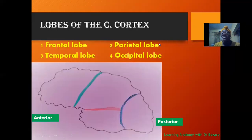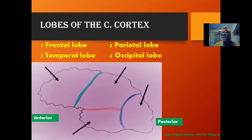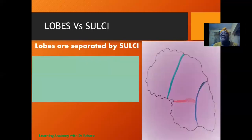This takes us to the lobes of the cerebral cortex. The cerebral cortex is divided into four lobes: the frontal lobe, the parietal lobe, the temporal lobe, and the occipital lobe. The lobes are formed as a result of sulci. We have three major sulci that help to divide the cerebral cortex into these lobes, as seen on the lateral side of the cerebral hemisphere.